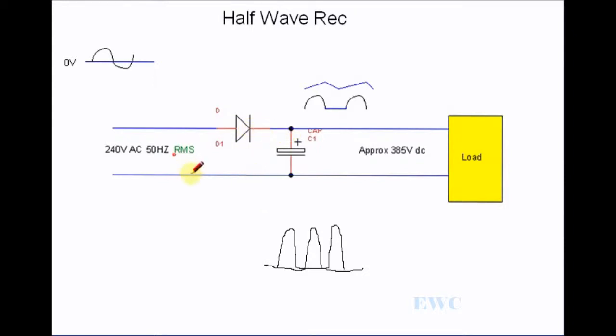And then at the next half cycle, when this side is positive and this is negative, it won't allow it to flow.